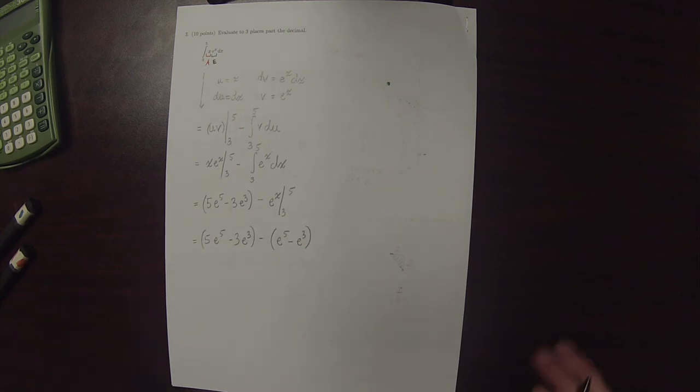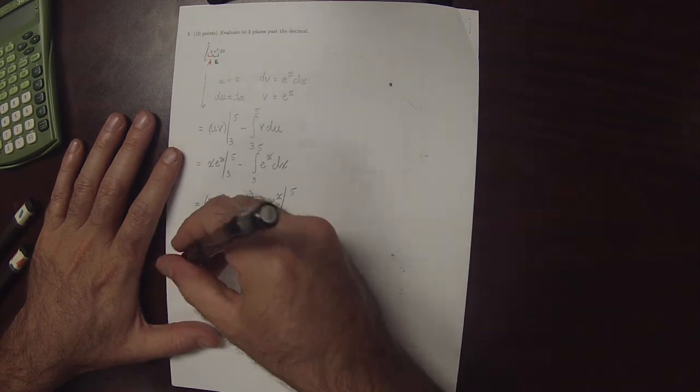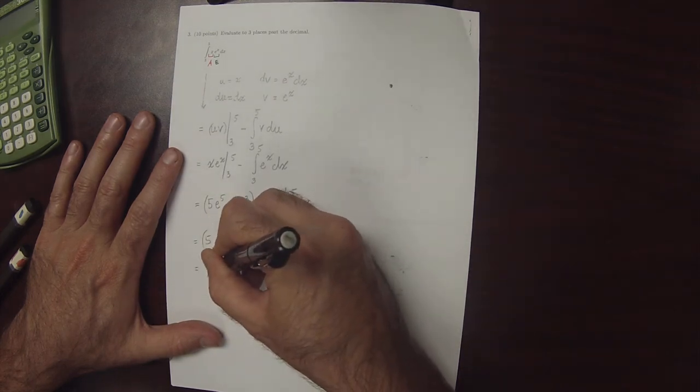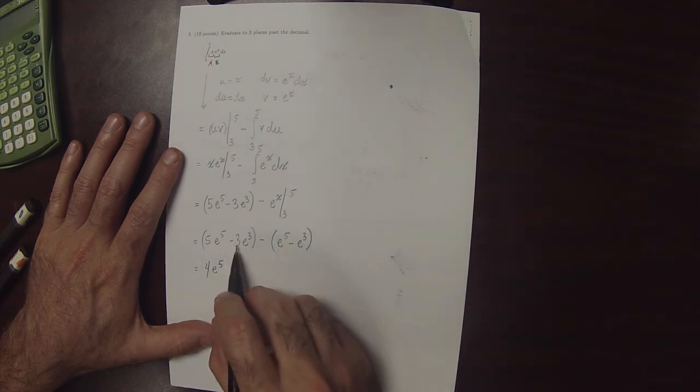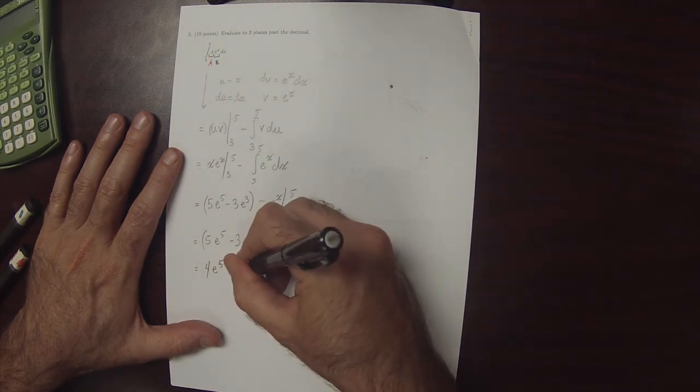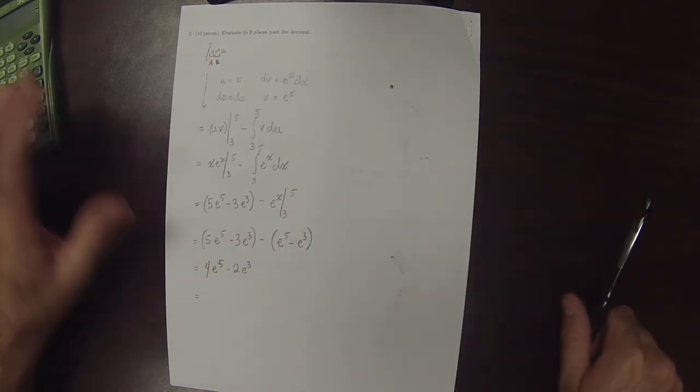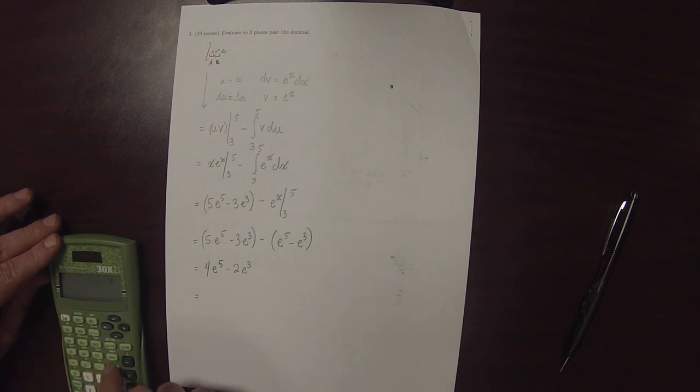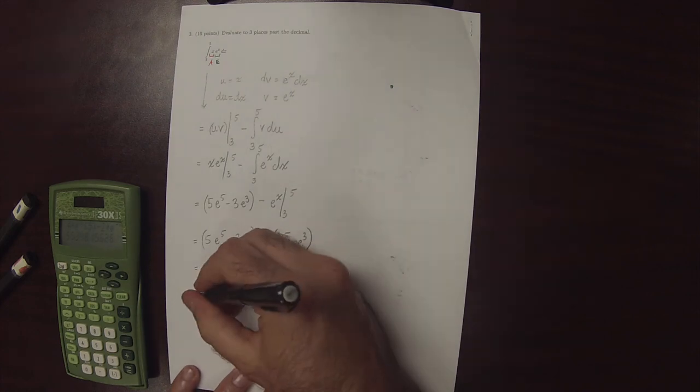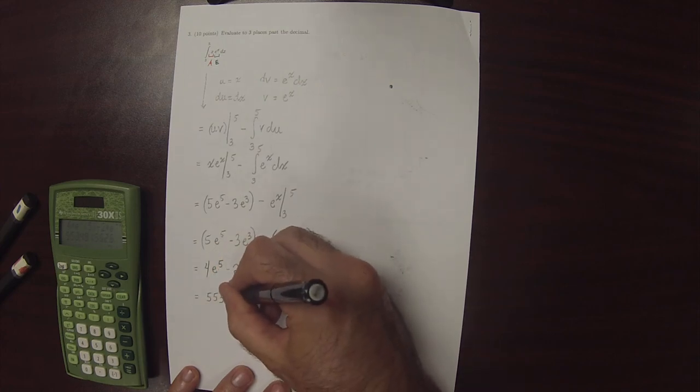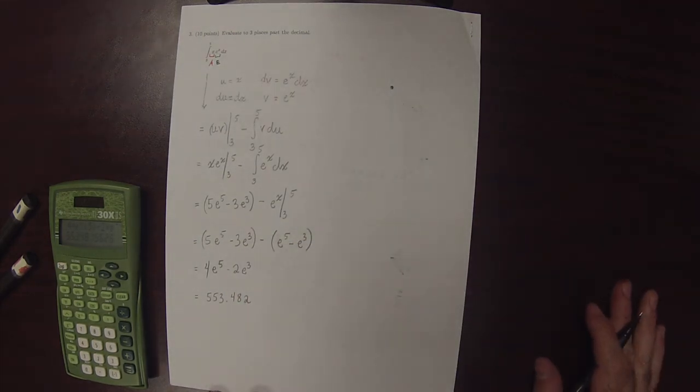So it says evaluate this to 3 places past the decimal. So I'll simplify this just a little bit. So this is 5 e to 5 minus 1 e to 5. So that's 4 e to 5. And this is minus, so negative 3 e to 3 plus an e to 3. So this is minus 2 e to 3. And plugging this in to the machine. 4 times exponential of 5 minus 2 times exponential of 3 is 553.482, rounded to 3 places past the decimal.